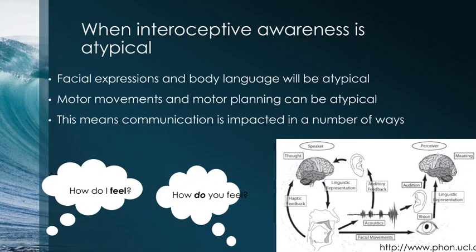On a really base level, when somebody says 'how do you feel?' — for people with atypical interoception, the question is 'how do I feel?' because I'm not sure how I know how I feel. That process of feeling, experiencing a feeling — how does one actually do that?